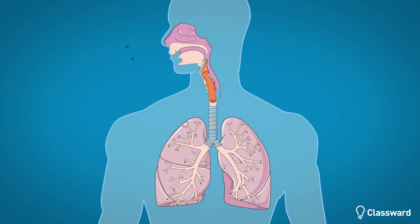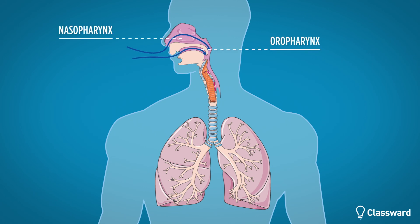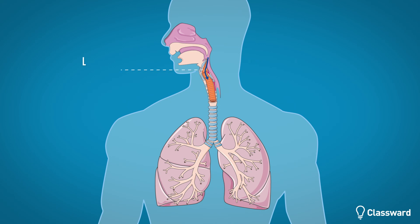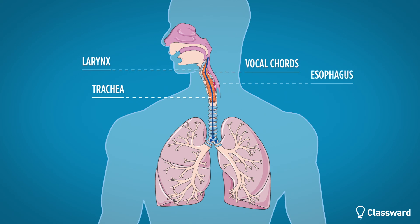As we take a breath, air enters into the oral pharynx and nasal pharynx through the mouth and nose. Here the air is warmed and moistened before it continues down the larynx, which contains the vocal cords, down the trachea, and into the left and right main stem bronchi.